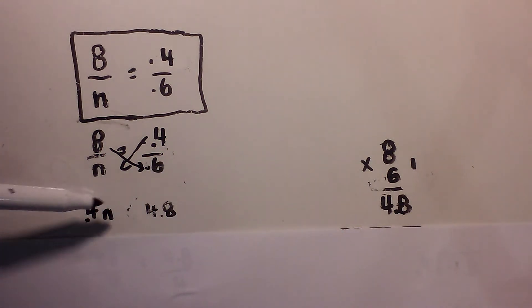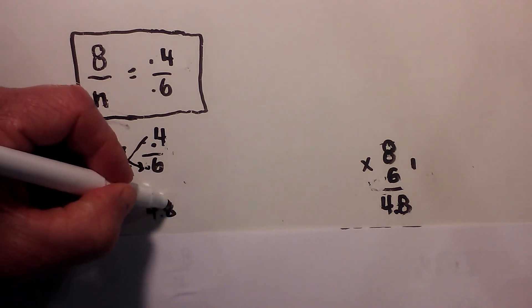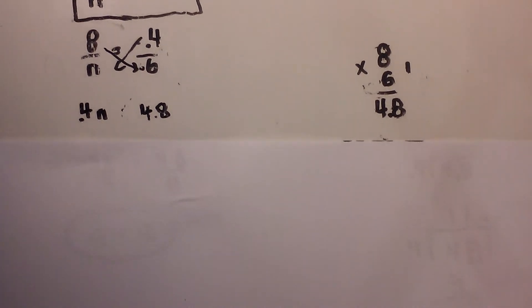So let's get back to our problem. We have 0.4n is equal to 4.8. Okay, now we need to divide both sides by 0.4.